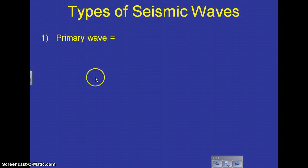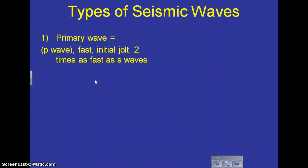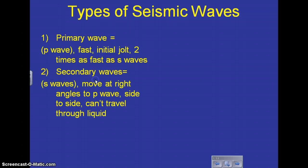There are different types of seismic waves. One is called the primary wave. That's the first jolt you will feel in an earthquake, and they're very fast. They're two times as fast as the next type of wave, which is called a secondary wave. The secondary wave moves at right angles to the P wave, which is the primary wave. So they kind of move side to side, and they can't travel through liquid very easily.